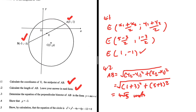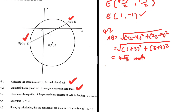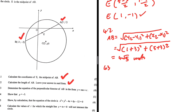We can leave it like that. That is 4.2. What about 4.3? In 4.3, we're supposed to determine the equation of the perpendicular bisector of AB in the form Y equals Mx plus C. To find the equation of a perpendicular bisector, we need the gradient of AB.